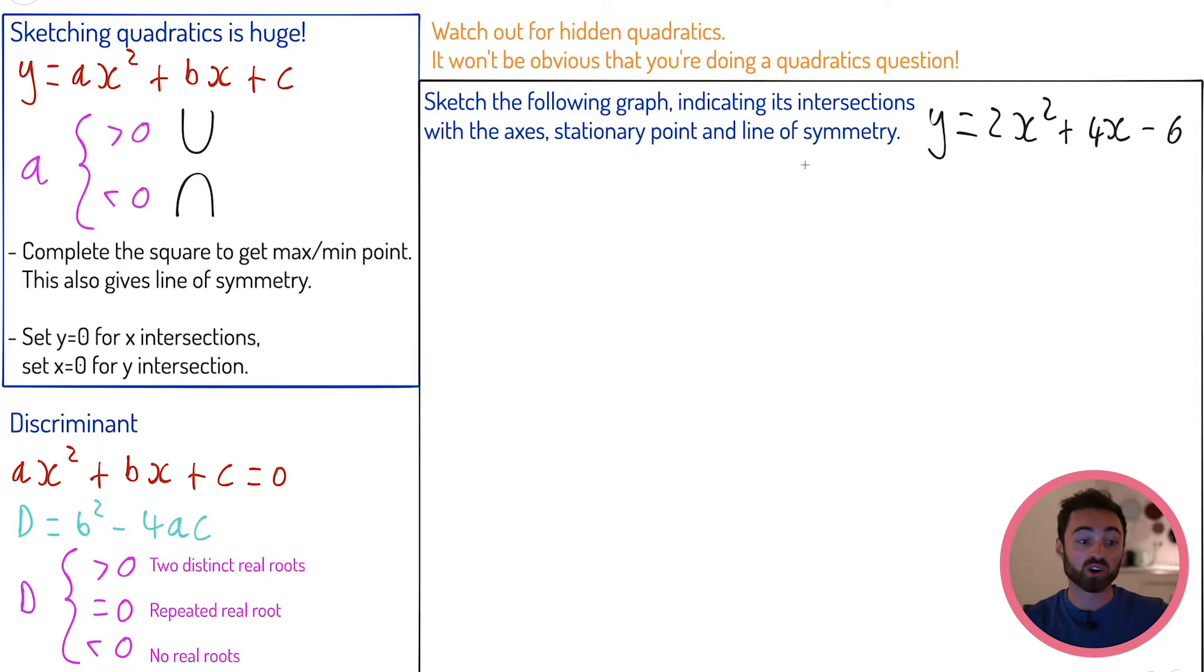The first thing I want to do is talk about sketching them. I'm actually just going to start off by doing this graph and then talking about the points as we get to them. So sketch the following graph, indicating its intersections with the axes, its stationary point, and its line of symmetry. Generally with any quadratic, it's only ever going to look like one of two things. If the number in front of the x squared, so the a in this case, is positive, it's going to be a smiley face. If it's negative, it's going to be a sad face. It's only ever going to look like one of those two things. B doesn't matter, C doesn't matter, it's only the number in front of the x squared. We know the shape, 2 is positive, it's going to be a smiley face. Next thing, intersections with the axes.